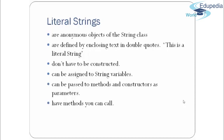Literal strings are anonymous objects of the string class, defined by enclosing text in double quotes. For example, "this is a literal string". They don't have to be constructed. They can be assigned to a string variable, passed to a method or constructor as a parameter, and they have methods that you can call.